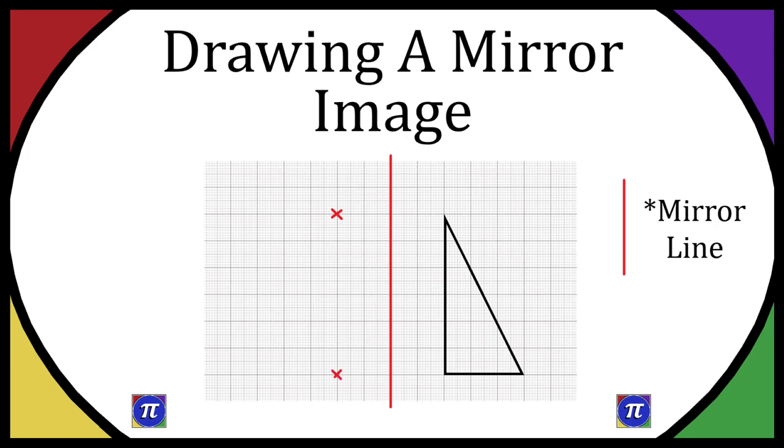And then the final bottom right point of the triangle, that is five big squares away from the mirror line so we're going to do another cross five big squares away from the mirror line on the left hand side.